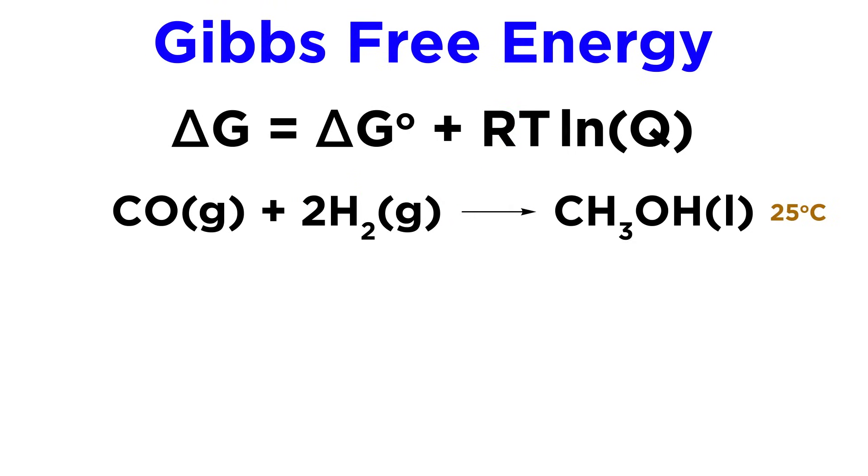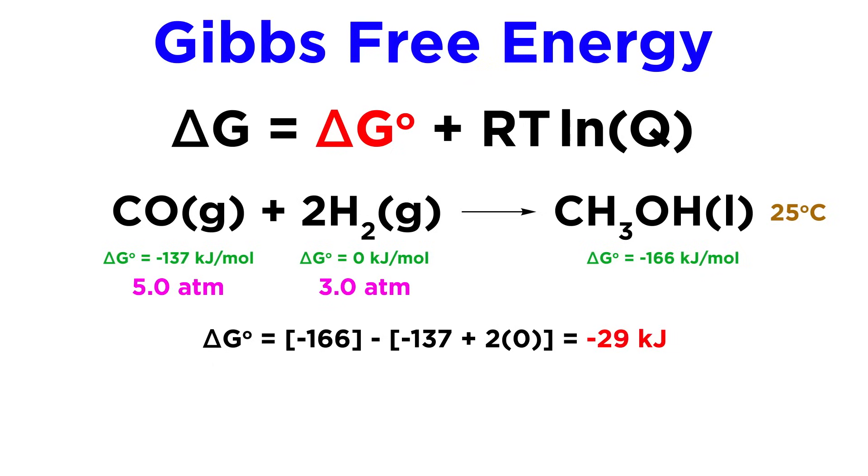Let's try this with the following room temperature reaction, where carbon monoxide reacts with hydrogen to yield liquid methanol, and the pressures of the gases before reacting are 5 atmospheres and 3 atmospheres respectively. We need to use this equation, and the first thing we need to get is the standard free energy change. We can get this by using tabulated free energy of formation data, as shown here. That gives us negative 29 kilojoules for the formation of one mole of methanol.